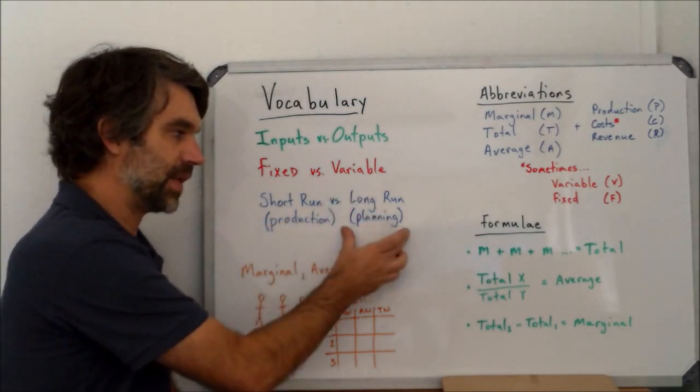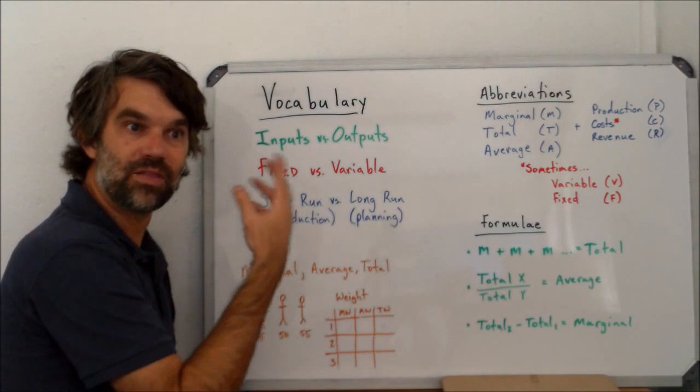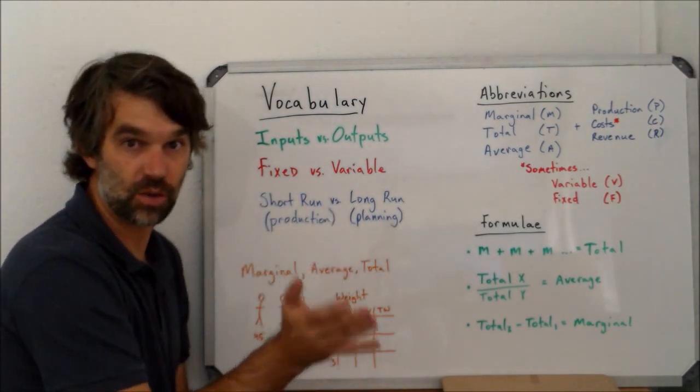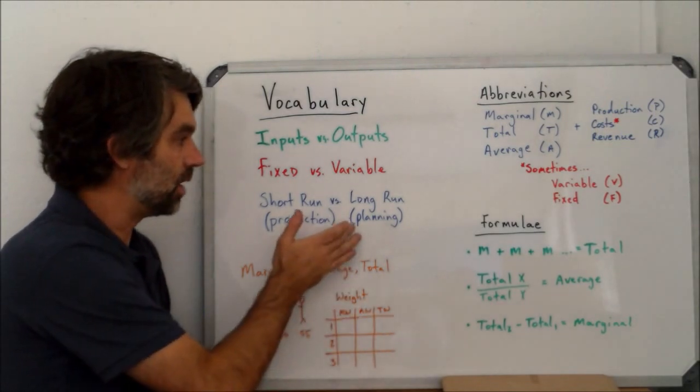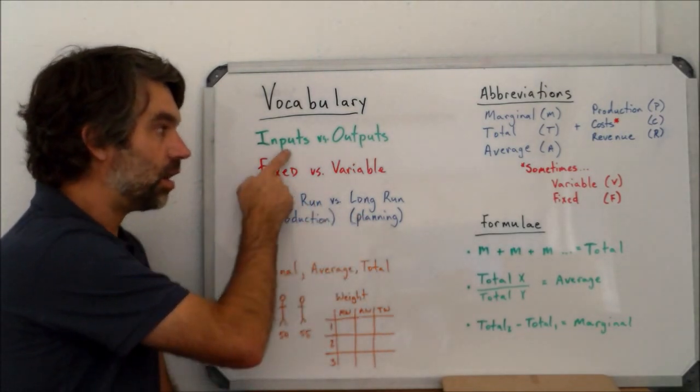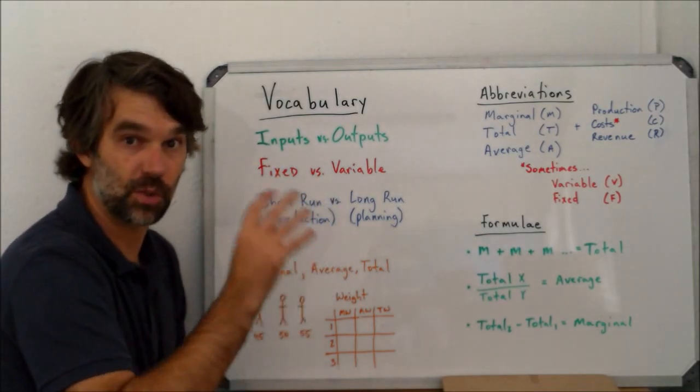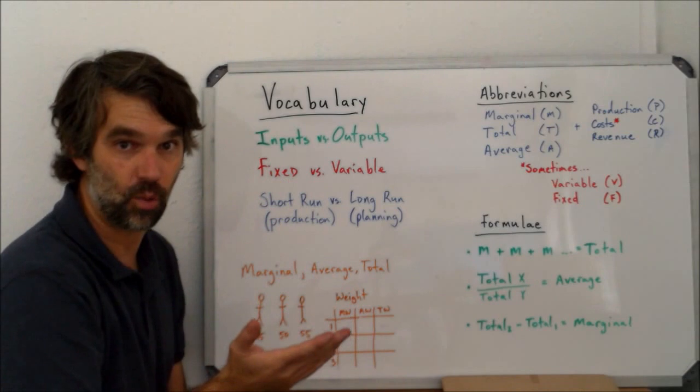The long run is the planning stage. What if I could do anything I wanted? So this is sort of like dream however you'd like thinking. In the long run, all of my inputs are variable. I'm planning and I'm thinking about what's optimal so in my mind I can change whatever I want.